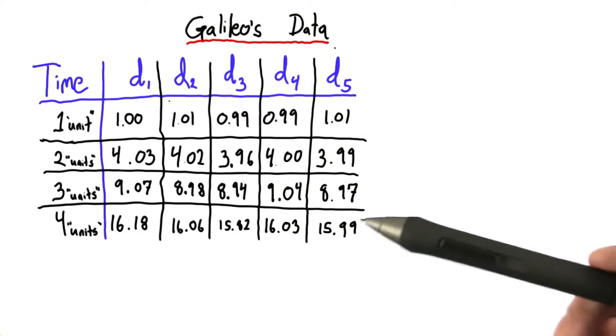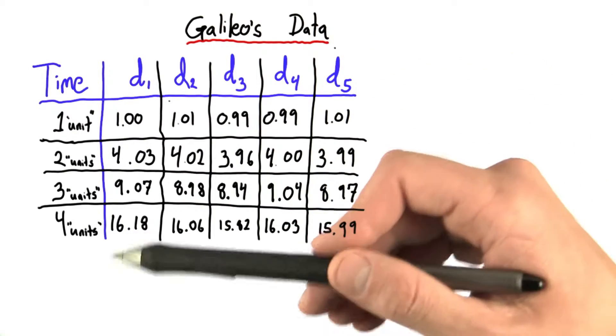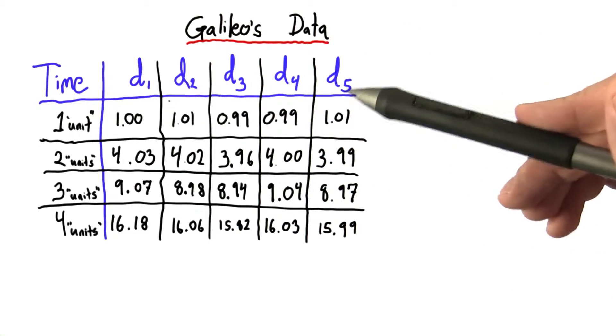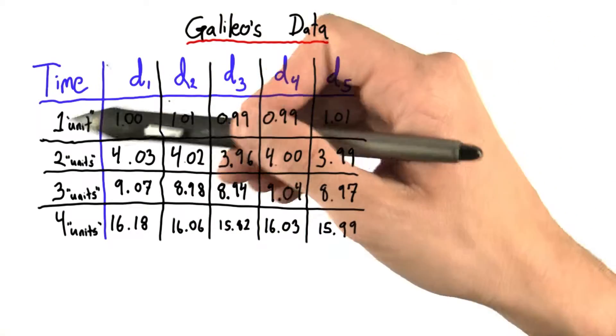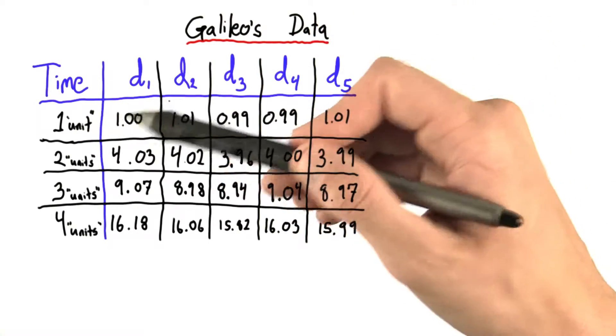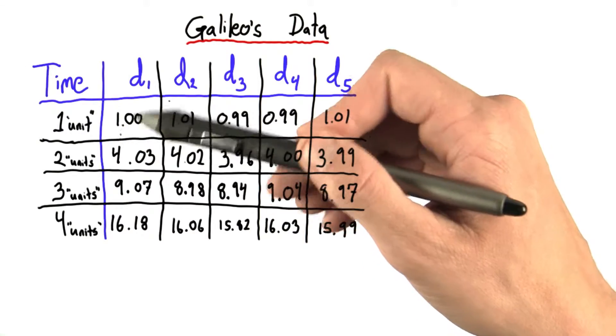Here's an example of what Galileo's data may have looked like. So in this version of the experiment, he ran through the experiment five times. In the first run through, when he allowed the ball to roll one unit of time, he measured a distance of one unit.